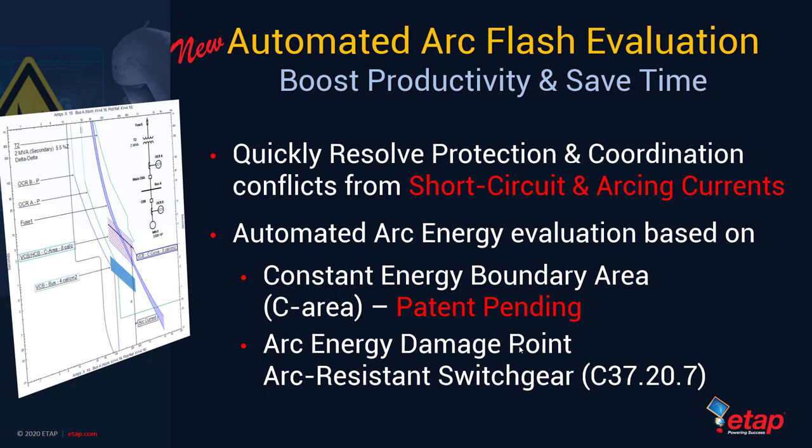Majority of the time is spent collecting settings for protection and coordination, but thereafter it's the balancing act between the bolted fault current and the arcing current. We are always trying to find an optimal setting for protected devices that meets coordination adequacy and safety through bolted fault current and offers personnel safety against arc energy release in case of an Arc Flash event. Automated Arc Flash evaluation allows you to balance and arrive at an optimal setting between these two varying fault currents using a concept of constant energy boundary area, or sea area.